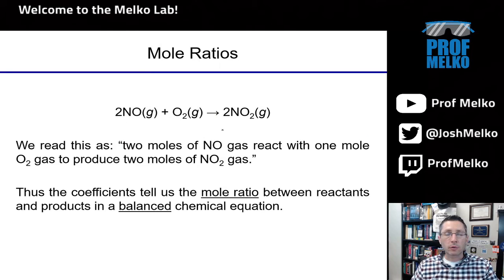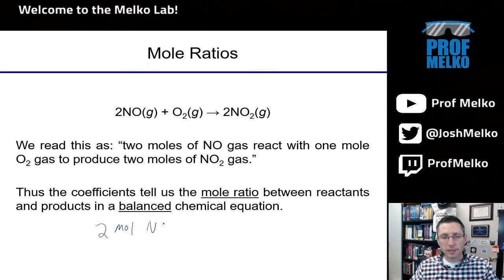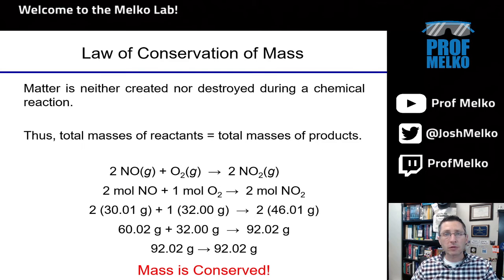We're going to need to work with these numbers and ratios to calculate and convert between amounts of reactants or products. We can read this chemical reaction as two moles of NO gas reacting with one mole of oxygen gas to produce two moles of NO2 gas. The coefficients are telling us this mole ratio — there will be two moles of nitric oxide for every one mole of O2. You can set up these ratios, which really are just unit factors, just like when converting centimeters to inches, or in this case moles of one reactant to moles of another.